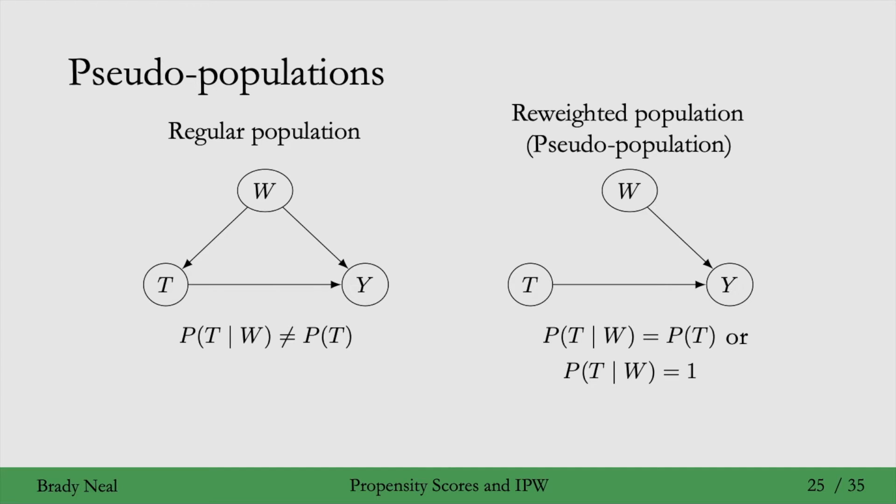Then, in this pseudopopulation, the graph looks like this. T no longer depends on W. We can get to a pseudopopulation via re-weighting.